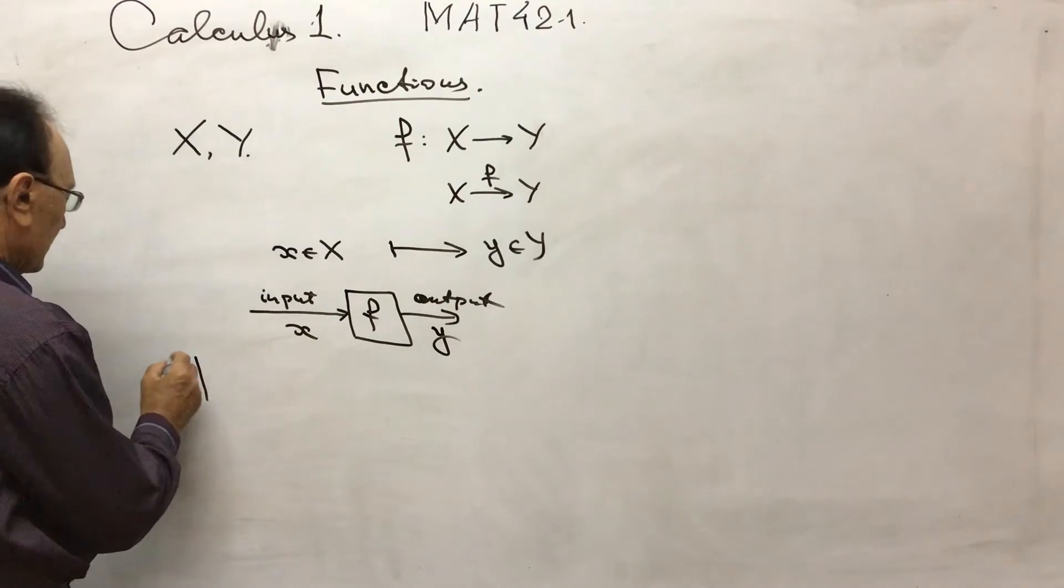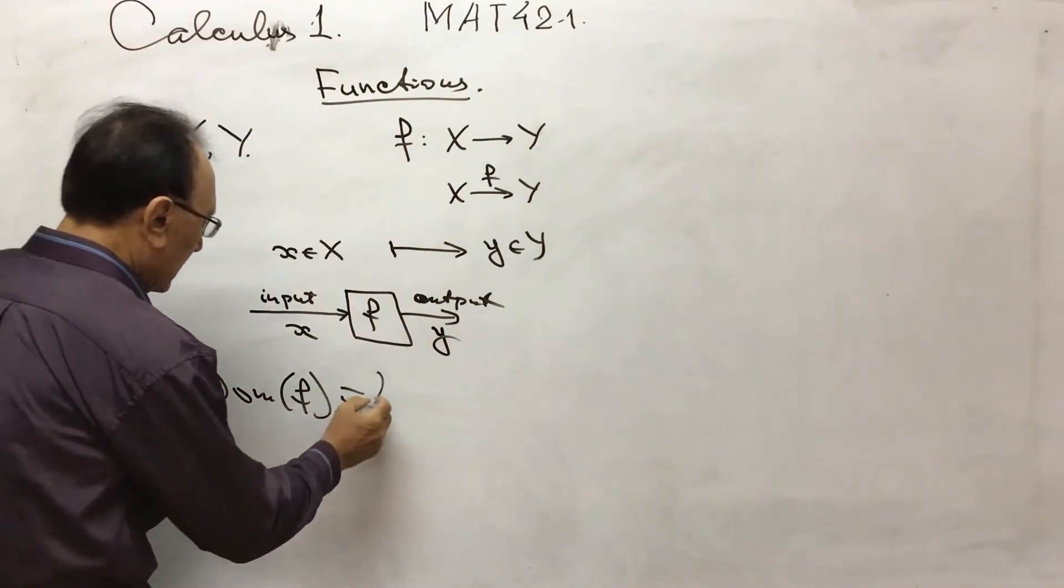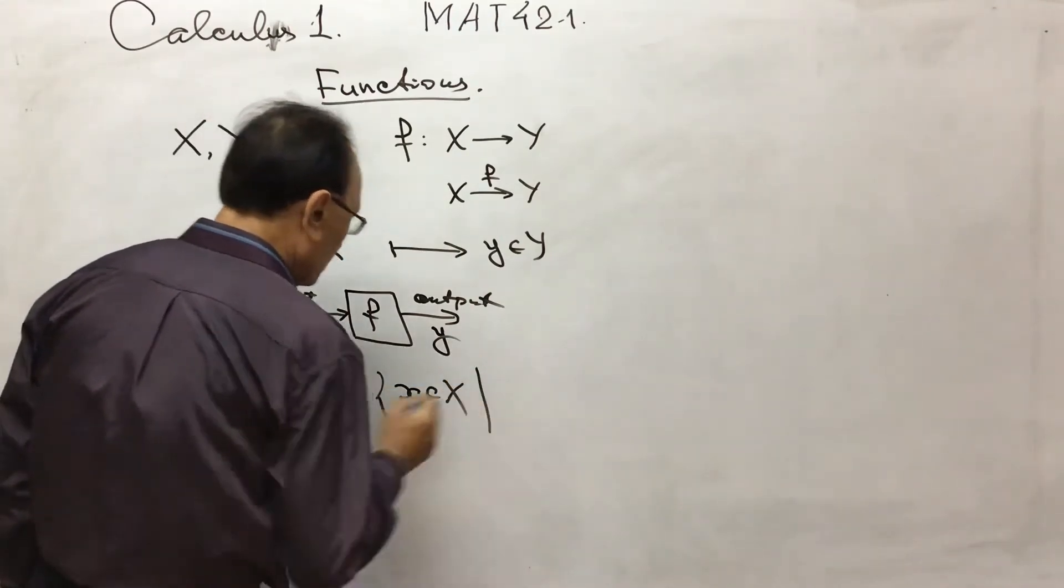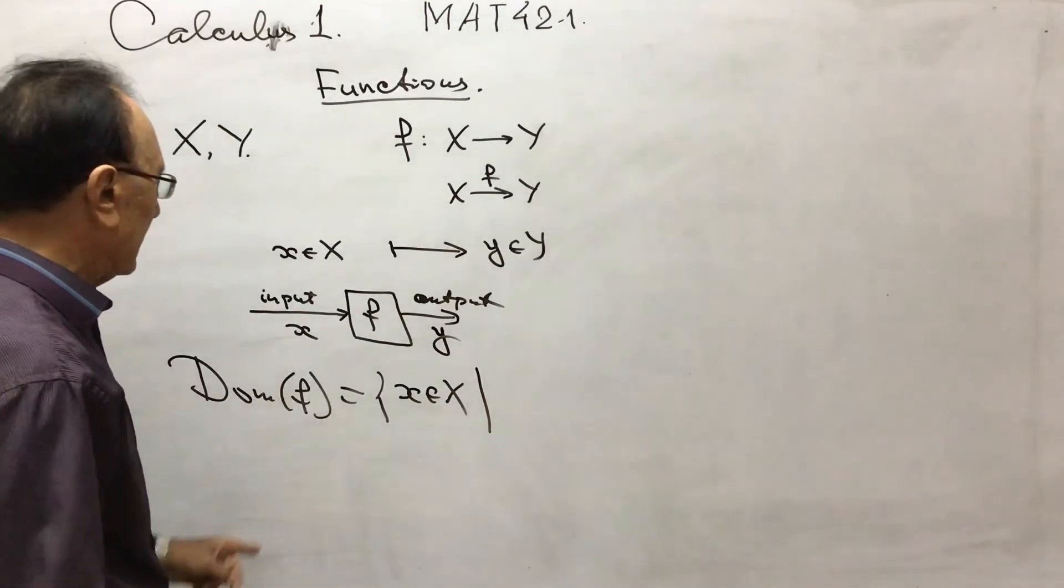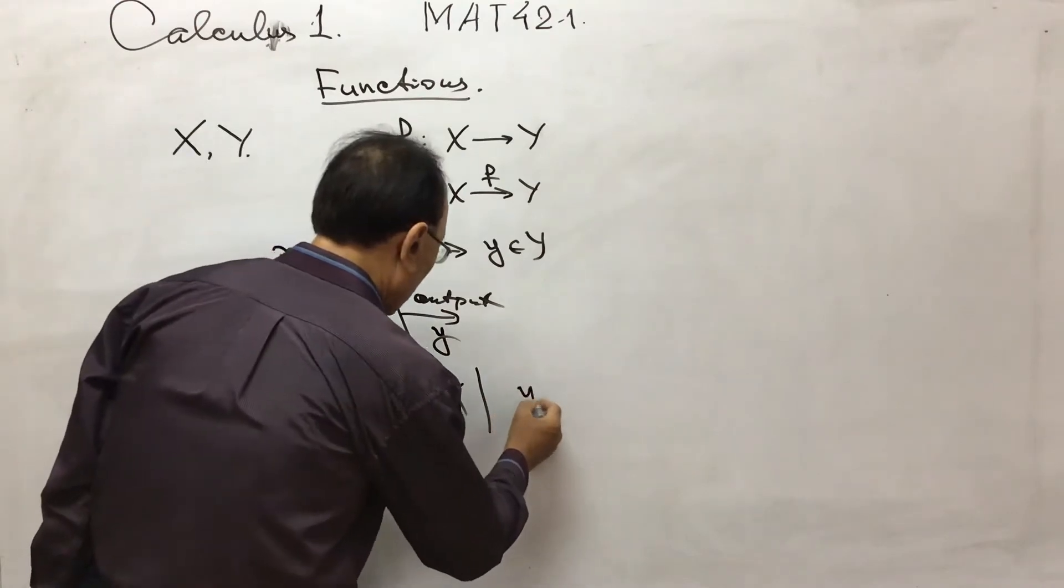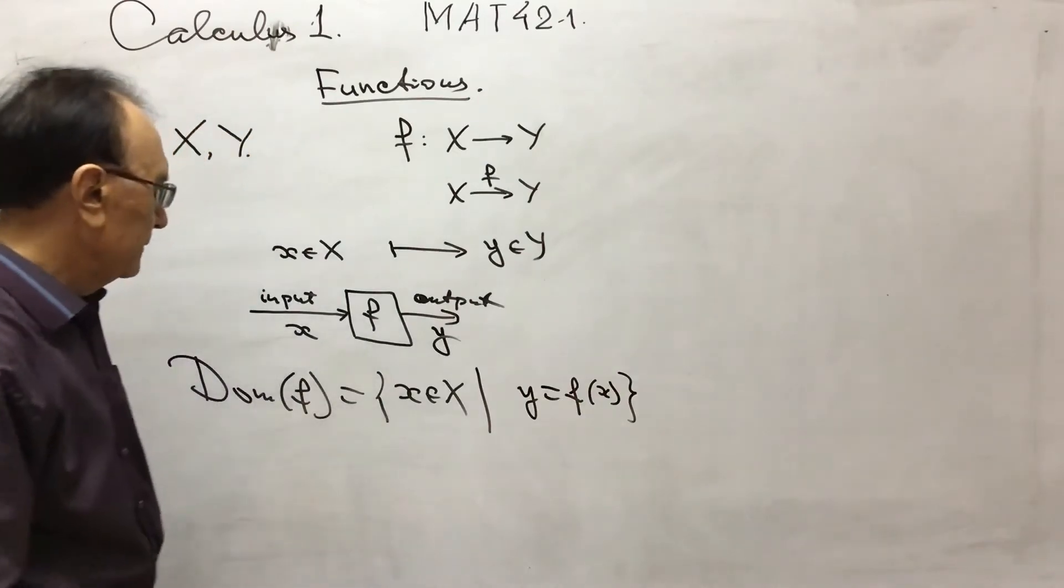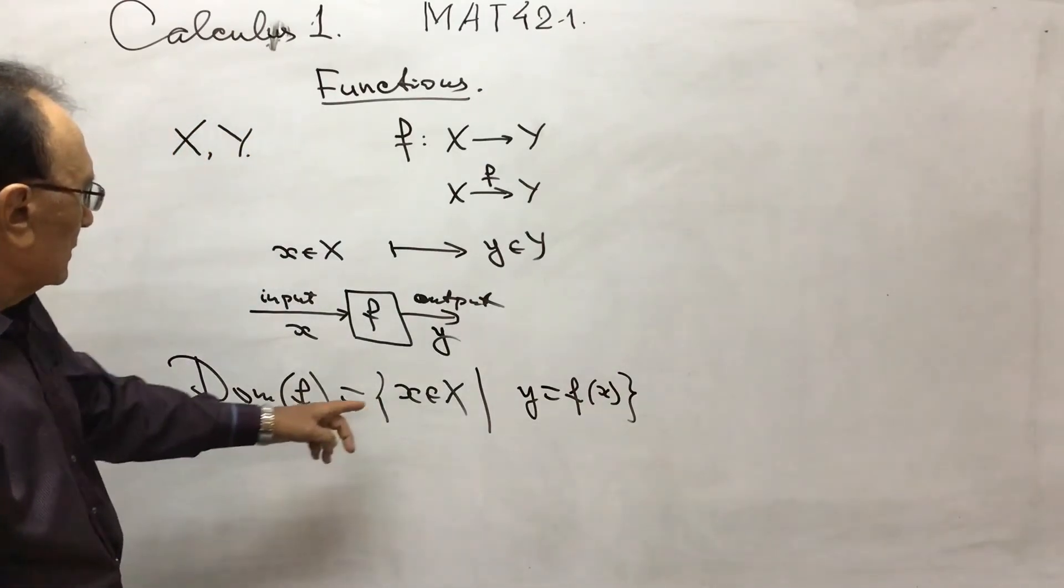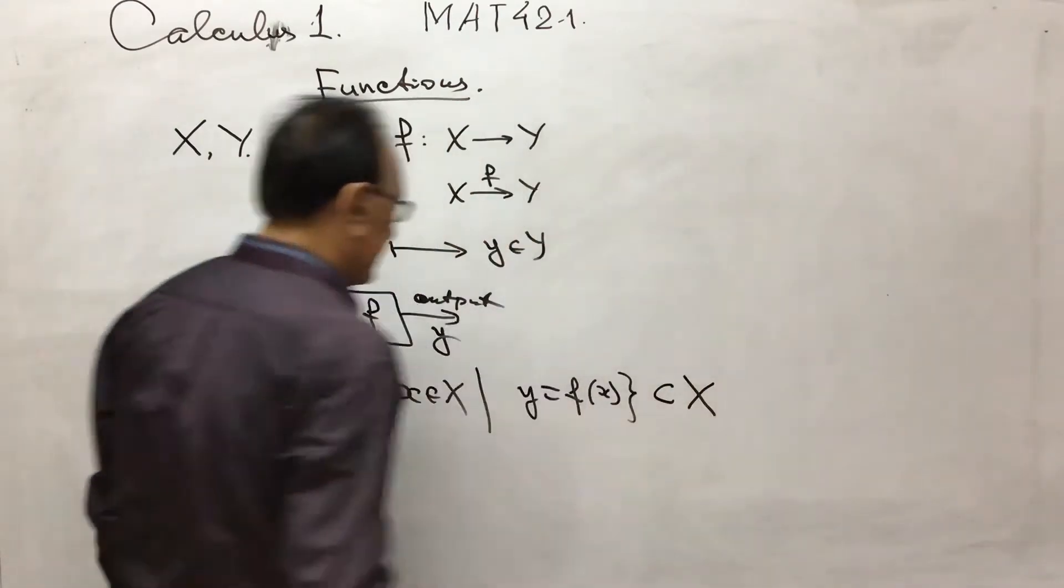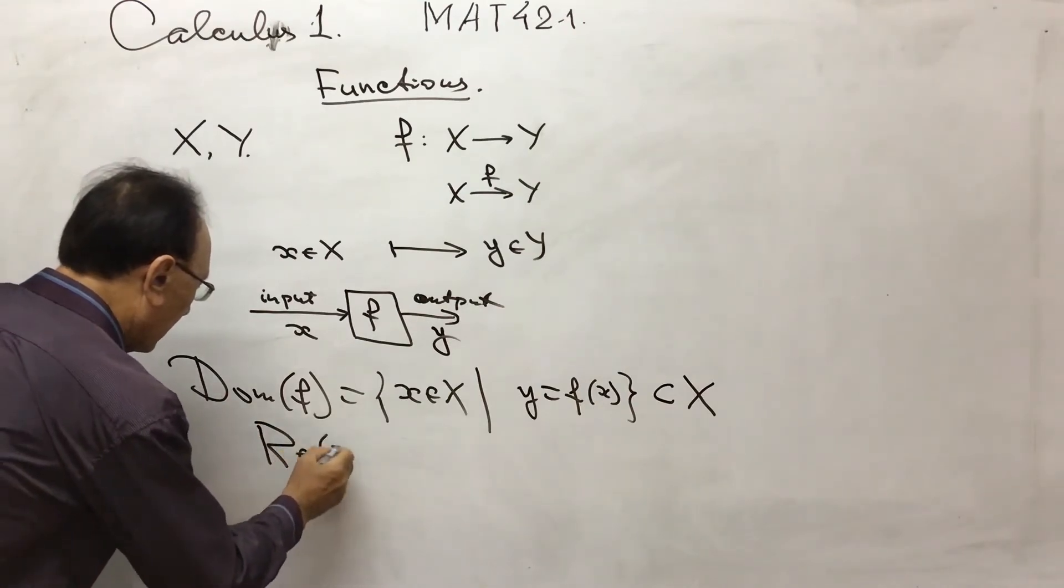So a function has its domain. Domain of function f. This is those elements of x but we can apply this rule f. So we have, we can write such a rule. So since x from x, this will be subset of x.